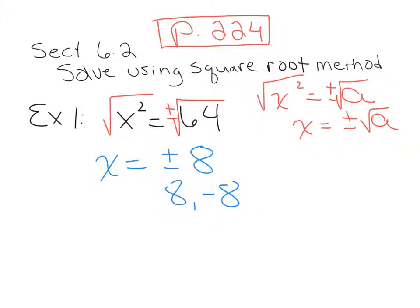If you wanted to use factoring on this instead, you would move the 64 to the other side and have the difference of squares, giving you (x+8)(x−8), and you'd still get positive and negative solutions. However, for the purpose of this class, we're always going to follow the directions and solve using the square root method.